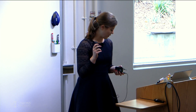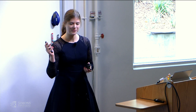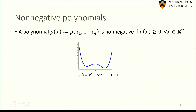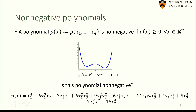I'm going to start with the basics, even though I'm aware that most of you know this. So what is a non-negative polynomial? A multivariate polynomial P in n variables x1 through xn is non-negative if P(x) is greater or equal to 0 for any x in R^n. Here I've drawn a univariate polynomial — it's obviously non-negative, but what if we're interested in showing that a more complicated polynomial is non-negative?